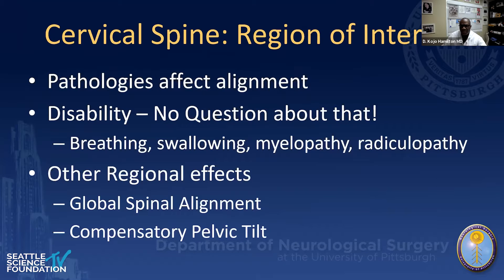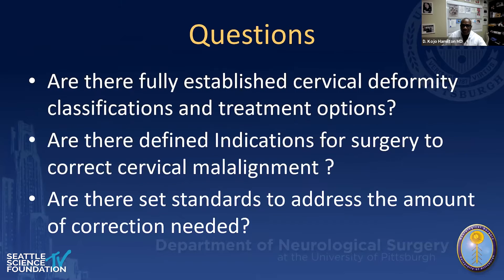Pathologies always affect alignment, which increases disability, including things in the severe form such as breathing, swallowing, and radiculopathy. When we talk about the cervical spine, I'm always interested in the global spine and the compensatory mechanisms used in the rest of the regions. The questions I wanted to ask are: are there fully established cervical deformity classifications and treatment options? Are there defined indications for surgery to correct cervical malalignment? And are there set standards to address the amount of correction needed?